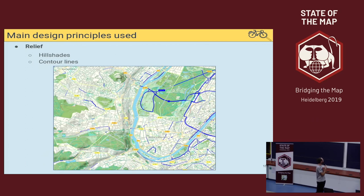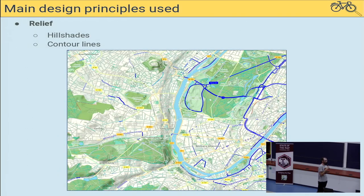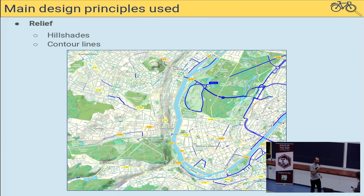The last thing is relief. For that we do two things: hillshading and contour lines. Hillshading is very useful and user-friendly because our brains are made to understand relief just from a shade. And if you want to be precise, you have the contour lines and can count them to understand the elevations.